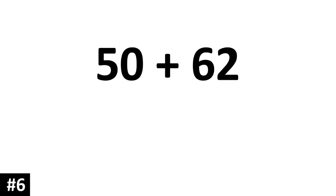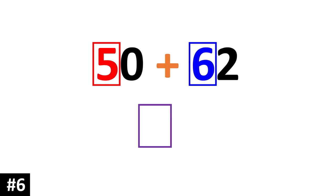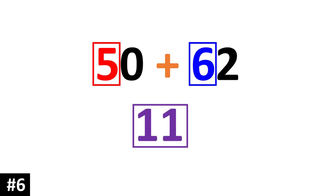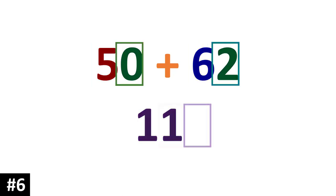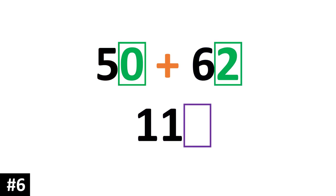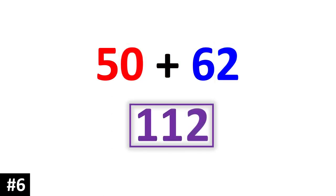50 plus 62. First we just focus on the tens column: 5 plus 6 gives us 11 tens. Focusing on the ones: 0 ones plus 2 ones is 2 ones. The answer is 112.